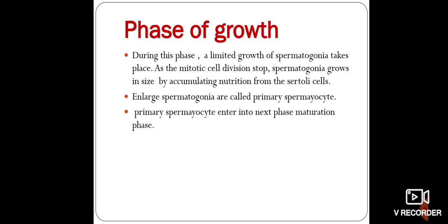The second phase is called the phase of growth. During this phase, a limited growth of spermatogonia takes place. As mitotic cell division stops, spermatogonia grow in size by accumulating nutrition from the Sertoli cells. In the phase of growth, Sertoli cells provide nutrition and nourishment for the growth of the cells. Large spermatogonia are then called primary spermatocytes.